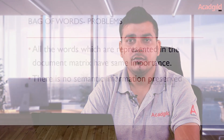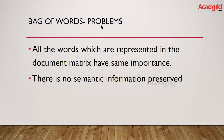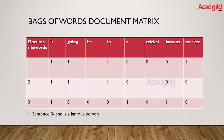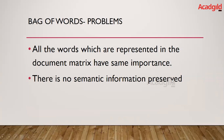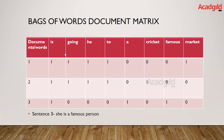The first problem with bag of words is that all words in the document matrix have the same importance. For example, words like 'is', 'going', 'he', 'to' all have value 1, the same as 'market'. This confuses the model. The second problem is that no semantic information is preserved — the model cannot differentiate between 'is' and 'going' because both have the same value.